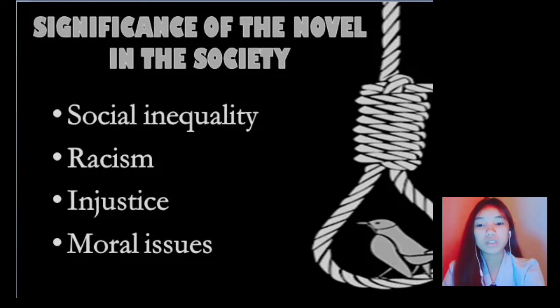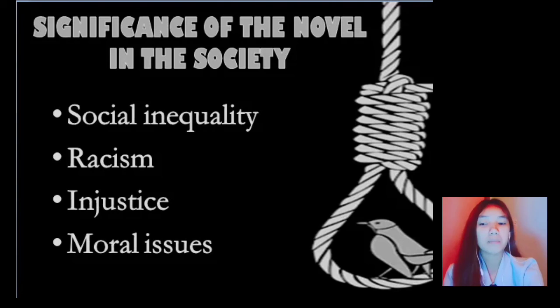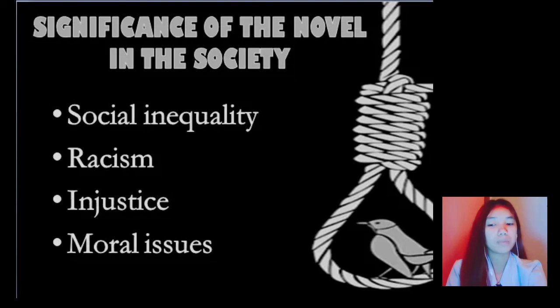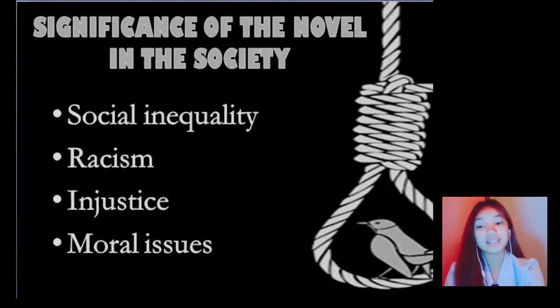The third point is injustice. Injustice can be seen in the persecution of Tom Robinson after being accused of raping a white woman. A related example is the case of a mother and son named Gregorio who were killed by a police officer without strong evidence, as well as accused drug pushers who were shot by police but whose relatives say were innocent. We can relate this to Tom Robinson, who was persecuted without enough evidence, leading to his death as well.